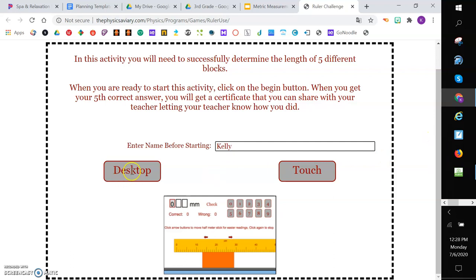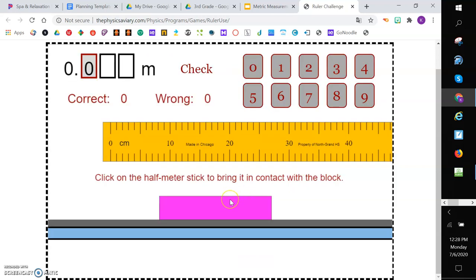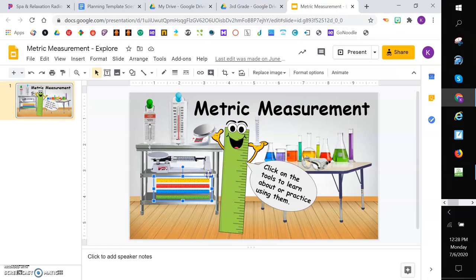Okay? Then you choose whether you have a desktop, regular computer, or if you have a touch screen. And then I'm going to click on the half meter stick to bring in contact with the book. And I'm going to use that to try and measure. And then after I think I have a guess, I'll put in what I think it is. And then I will click the check button to check if I am correct or not. So you're going to play around with the tools for measuring length, for measuring mass, for measuring volume, and also for measuring temperature.